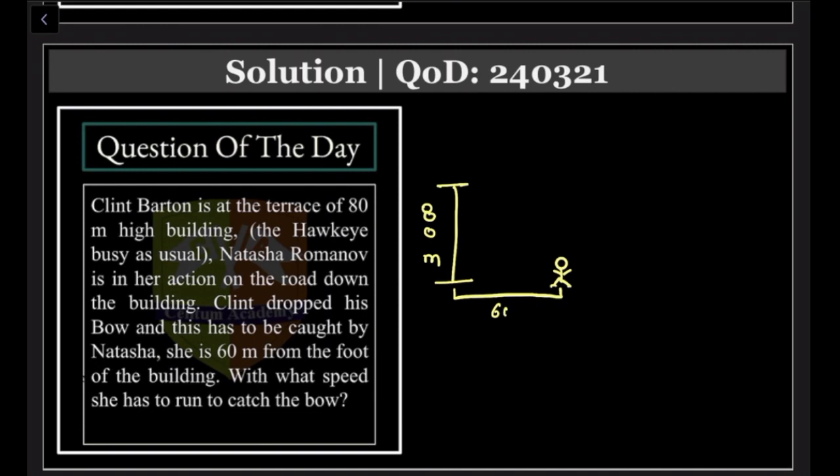This distance is 60 meters. Barton dropped the bow from here.